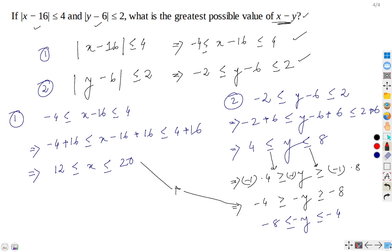Now, we are going to add it, so, 12 to -8, x to -y. So, simplifying, we obtain 4 ≤ x - y ≤ 16.